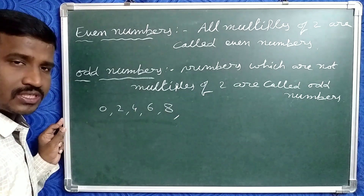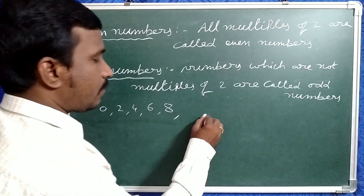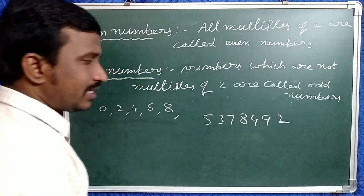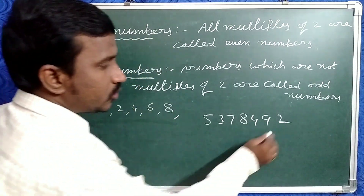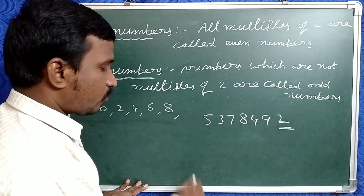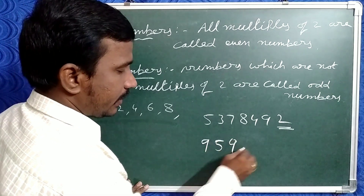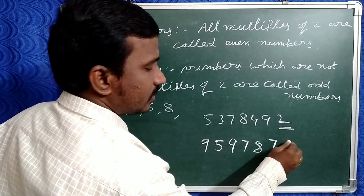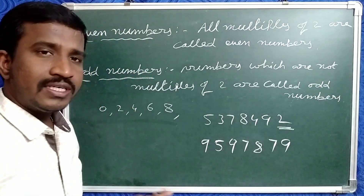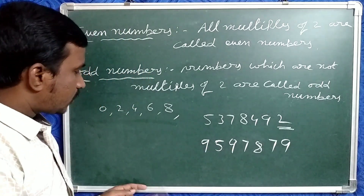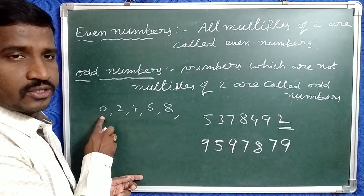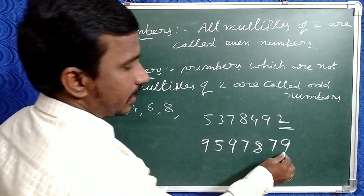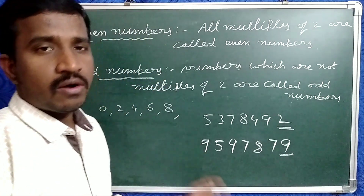Otherwise odd numbers. Suppose take a big number 5,3,7,8,4,9,2 — this is an even number because the units place digit is 2. Suppose take 9,5,9,7,8,7 — the units place is 9, which is not 0, 2, 4, 6, or 8. That is why it is an odd number.